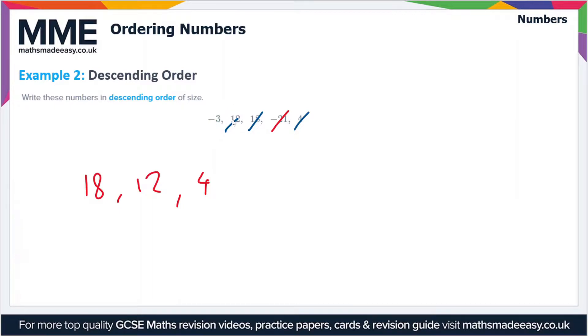Let's cross those out and consider the negative numbers now. The more negative a number is, in other words the greater the number after the minus sign, the smaller the number is. So we've got -3 first, then -21. These are now in descending order.